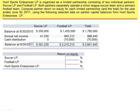Exercise 12. Hunt Sports Enterprises LP is organized as a limited partnership consisting of two individual partners, Soccer LP and Football LP. Both partners separately operate a minor league soccer team and a semi-pro football team. Compute partner return on equity for each limited partnership and the total for the year ended June 30, 2011, using the following selected data on partner capital balances from Hunt Sports Enterprise LP.